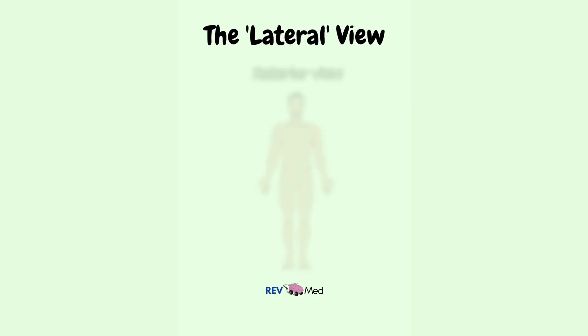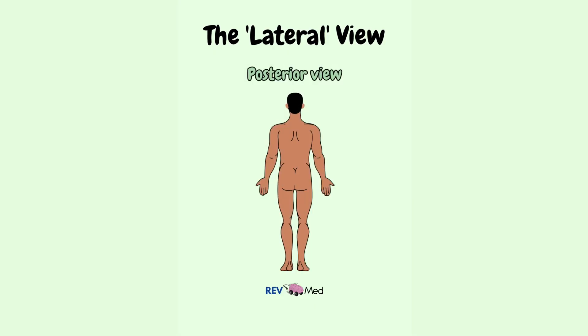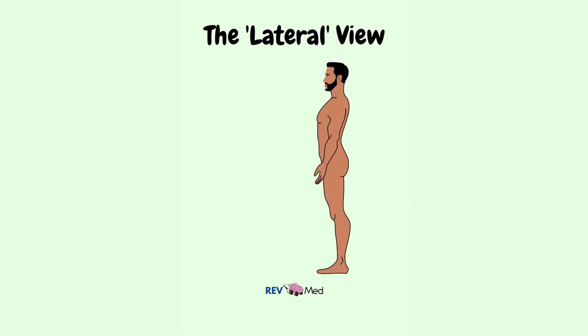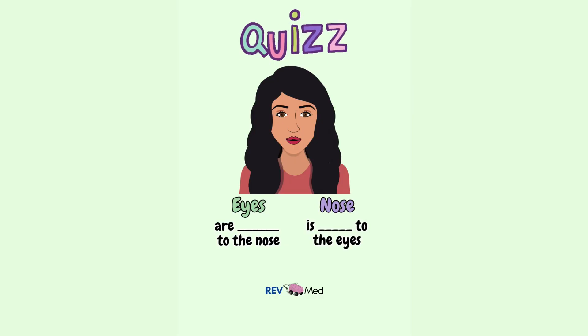The term lateral is also used to describe the view of the body — the side of the body is its lateral view. The eyes are blank to the nose, and the nose is blank to the eyes. Comment below what you think.